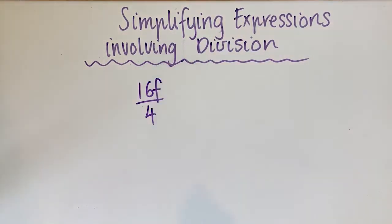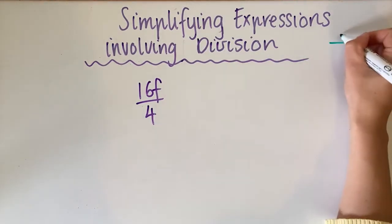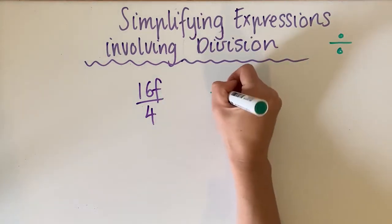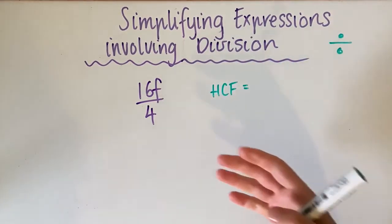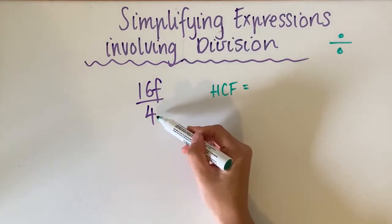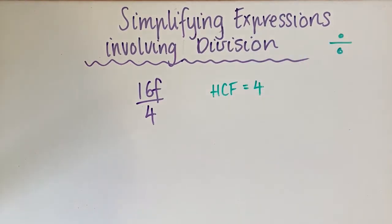So you might see something like this: 16f over 4. A reminder that when we see a fraction, a fraction means division because the division sign actually looks like a fraction. So what we need to do first is find the biggest number that goes into 4 and 16. This is called the highest common factor — the largest number that goes into both of them. 4 is the biggest number that goes into 4 and it also goes into 16, so the highest common factor is 4.